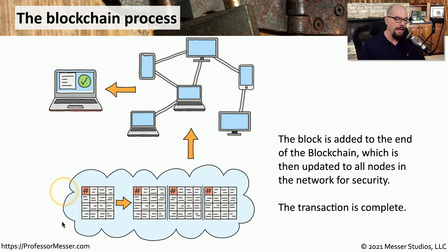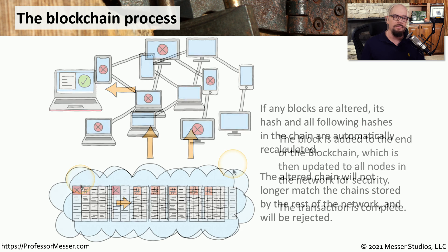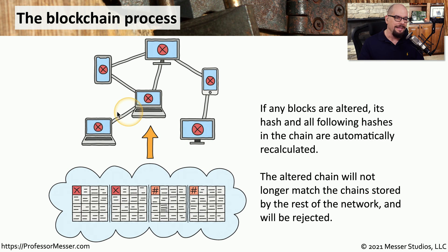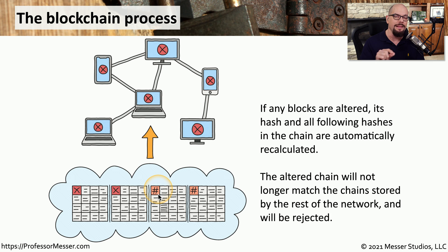Once that hash is created, we have a complete block that can be added to the existing blockchain. This block is then copied to all of the devices maintaining that ledger across the entire blockchain network. One concern with a distributed ledger is that any node on the network might want to make changes to something already verified. That's why the hash is added to each block — if any changes are made, we'll know immediately, and we can discard anything that doesn't verify against the existing hash.